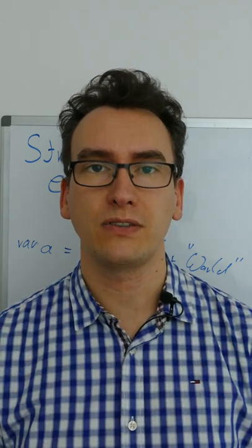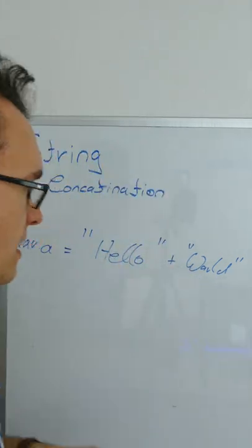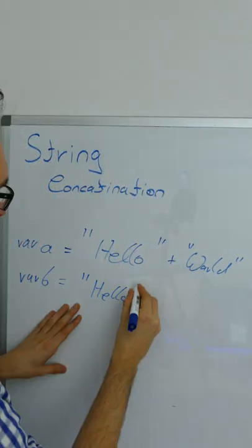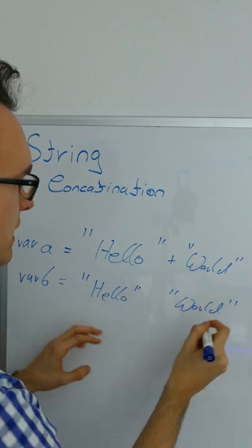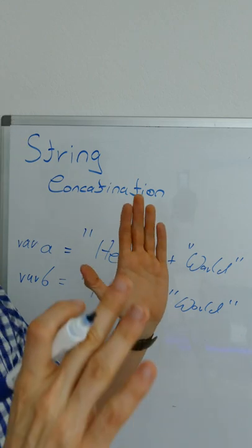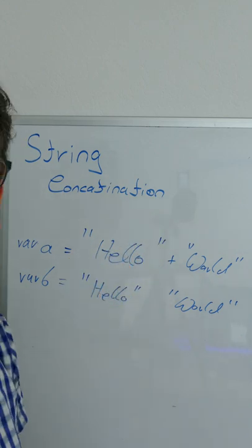Another option to concatenate strings is if we have variable b equals 'Hello' and the second one is 'World'. As you can see, we don't have any space, comma, or anything that separates them, which also concatenates the string literals.